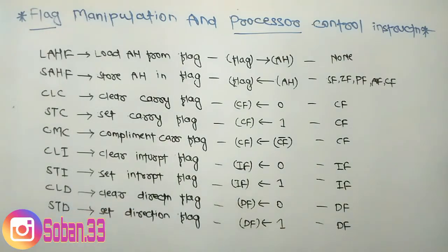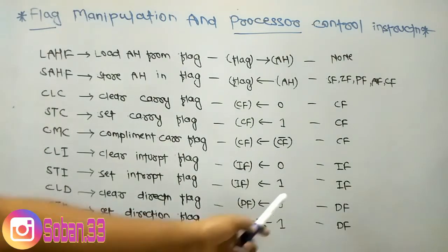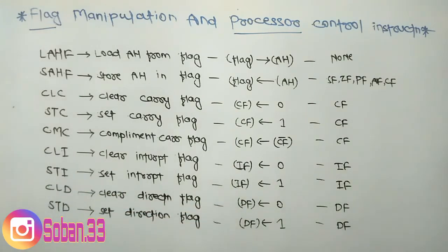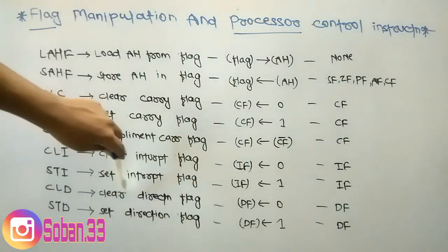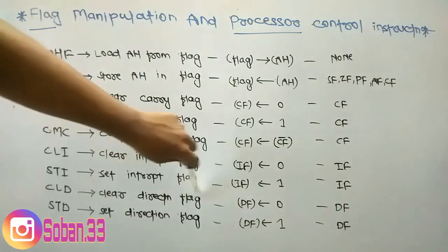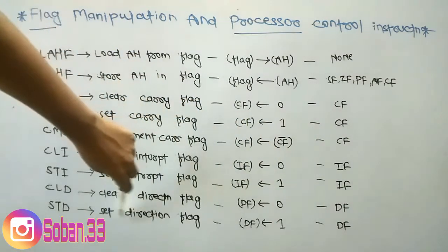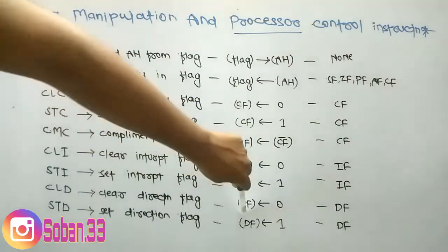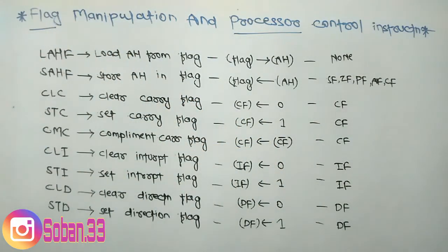STI means Set Interrupt Flag — we insert 1 into the interrupt flag. Then CLD means Clear Direction Flag — the direction flag is set to 0. STD means Set Direction Flag — the direction flag is set to 1. We modify these flags based on our use case.